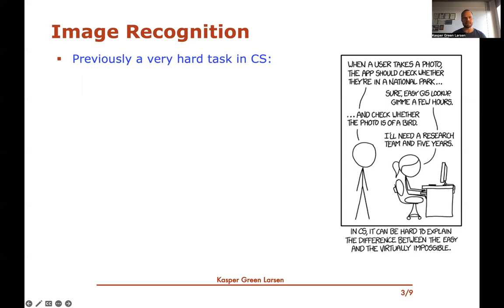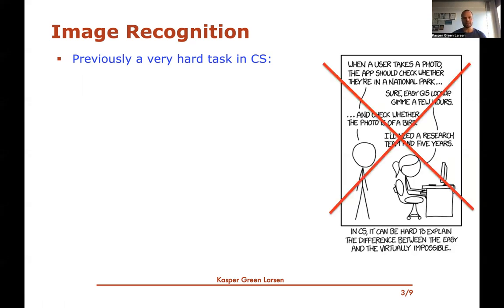What this really says is that image recognition used to be a very hard task, because it's not easy to sit down as a programmer and write a sequence of rules that determines whether what's on an image is a bird, a cat, a dog, and so on. Fortunately, this is not really the case anymore — we've moved beyond this depressing situation and can now actually do image recognition really well.